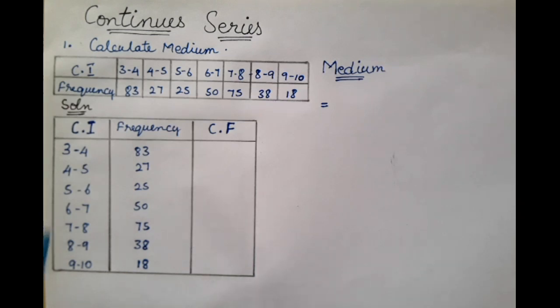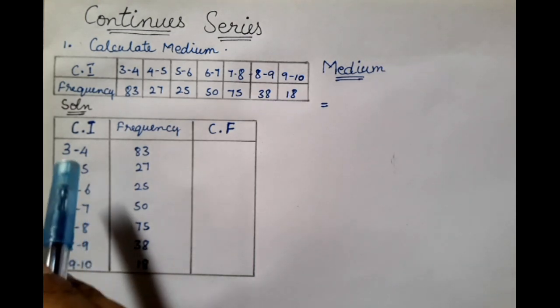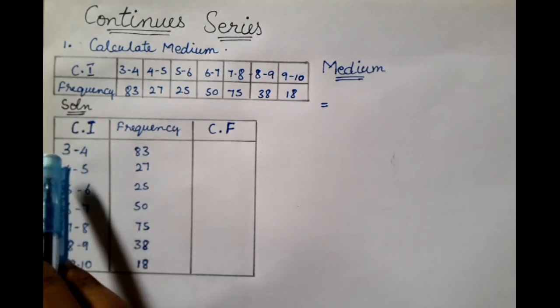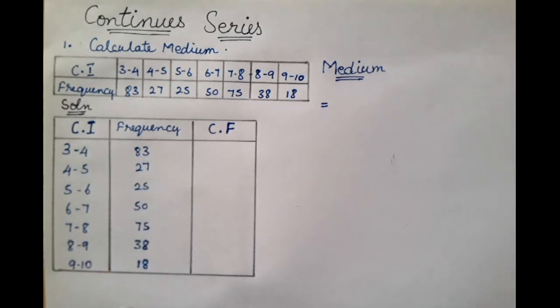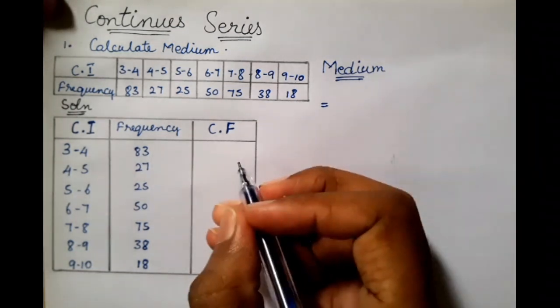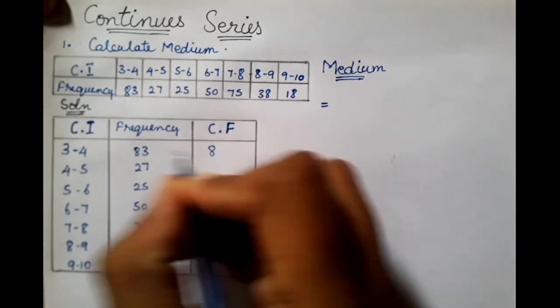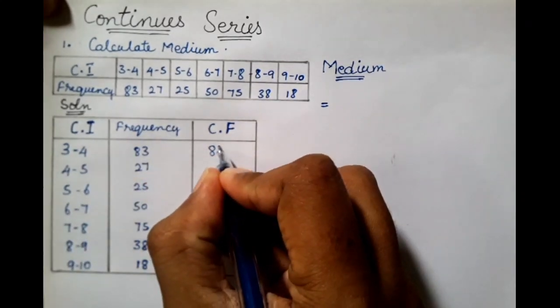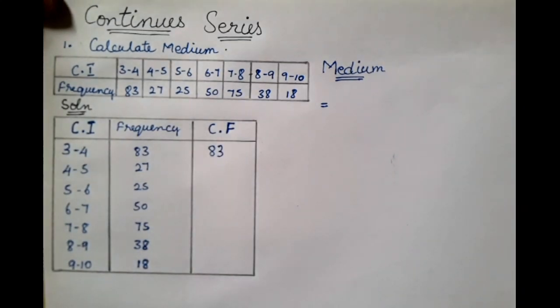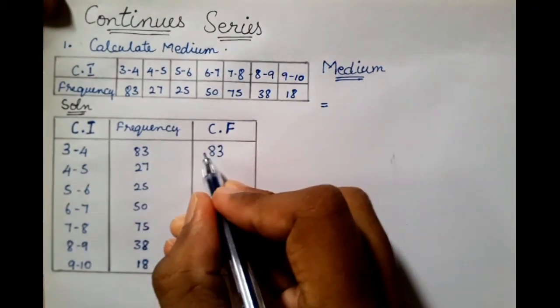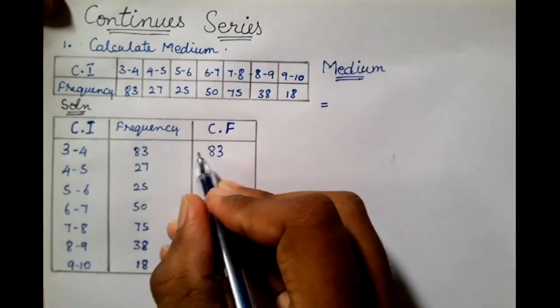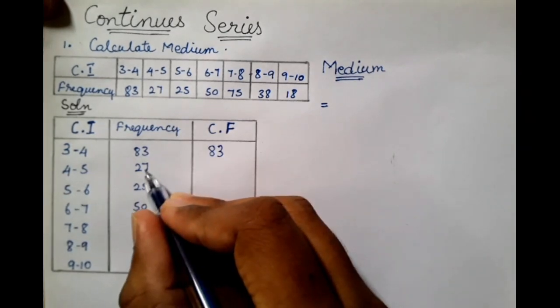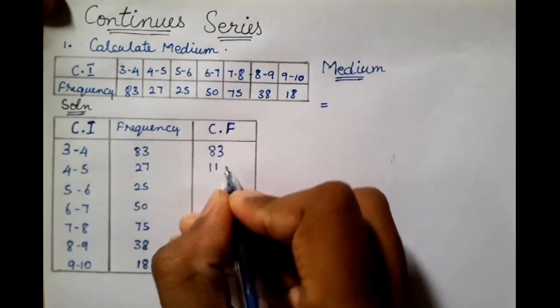First of all, the frequency is already given. Class interval 3-4 and frequency 83, 27 are already given. The next step is to make CF. Let's see how the CF is made. In this first one, the frequency is already given. The next step is to add 83 and 27. Add 83 plus 27, it is 110.